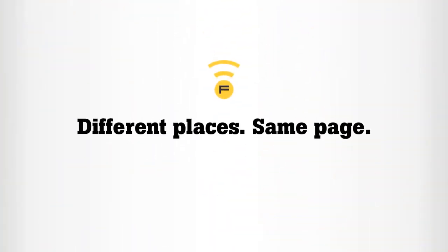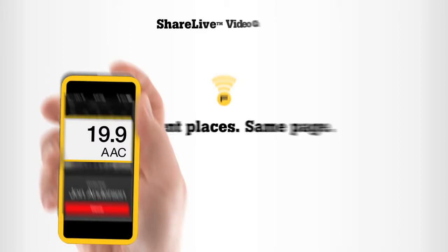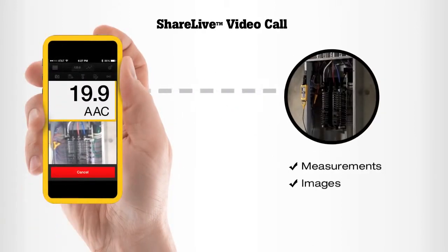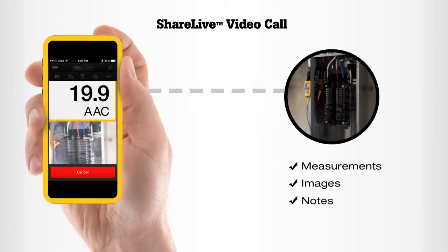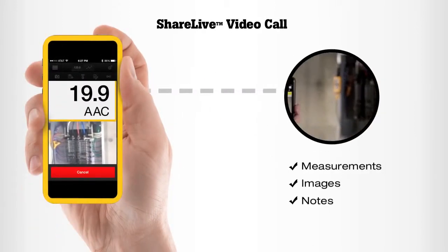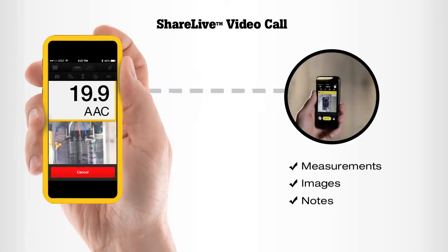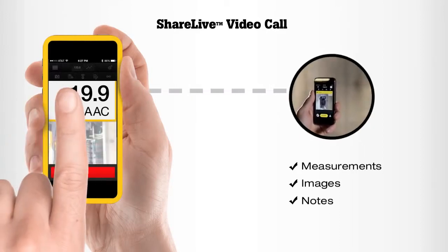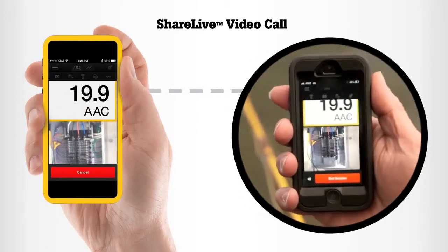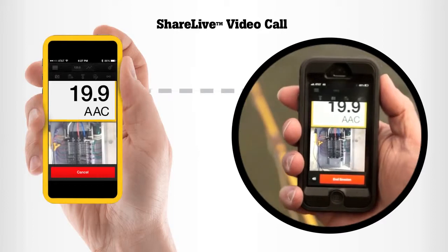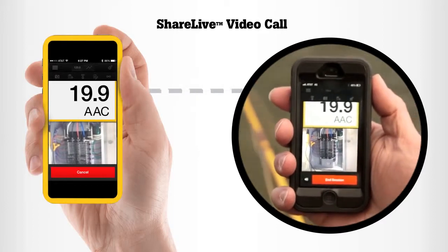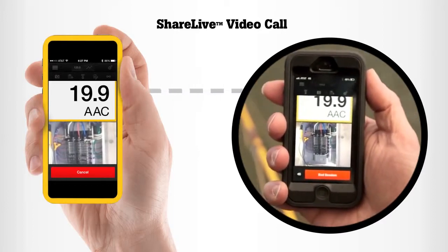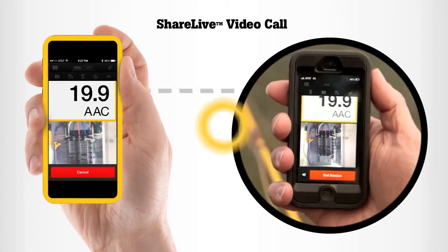With the Fluke Connect app, you can give co-workers instant access to all your measurements, images, notes — anything you want to share — with ShareLive video call. No one has to walk across the plant or drive into the office. With real-time video and measurement sharing, you can collaborate seamlessly, solving problems faster than ever before.